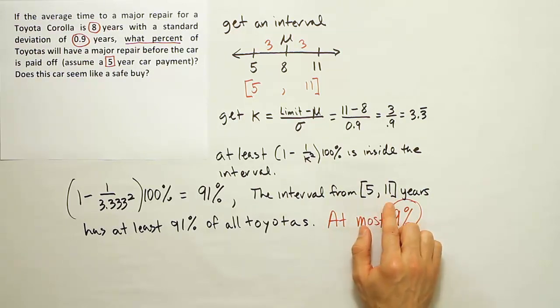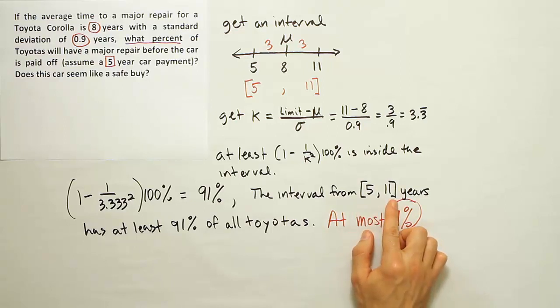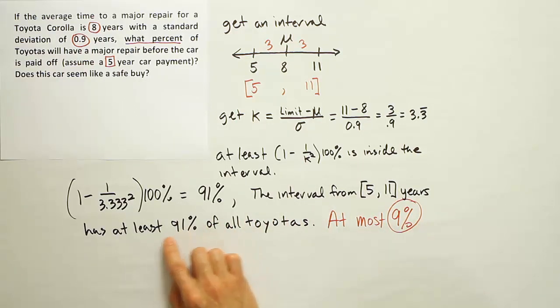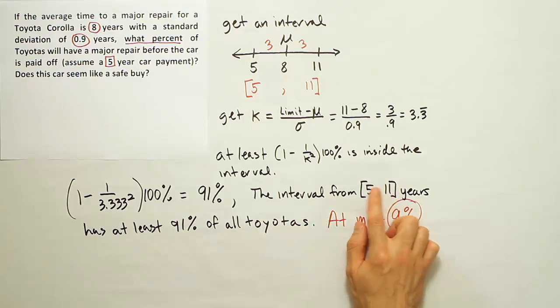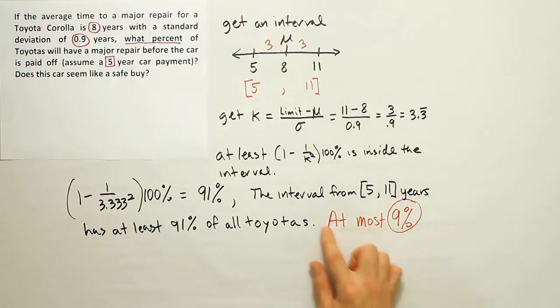Because we don't have the assumption of symmetry when working with Chebyshev's theorem, we don't know that half of this is on this side and half of it's on that side, and also we don't know if there's any of it outside of this interval. It could very well be that this interval contains all of it, right? Because it says at least 91%. Maybe 100% of all Toyotas will go from 5 to 11 years before having their first major repair. So maybe every Toyota that's ever going to break at some point is going to break within this time frame for the first time. Maybe no car goes longer than 11 years without breaking, and no car breaks before 5. That's entirely possible.